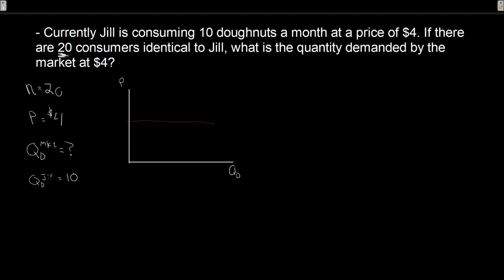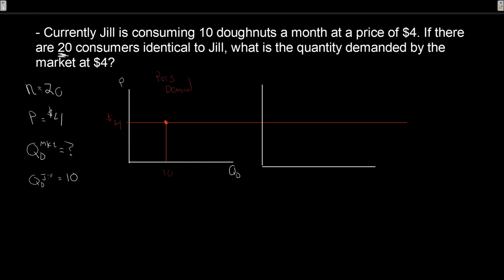What we do know is that at a price of $4, Jill is consuming 10 donuts. Although we don't know the full curve, we know this single point on her demand curve: at $4, she buys 10. What we are trying to find is the market demand. For the market, we'll have price of donuts and quantity demanded. We need to figure out what is this market quantity demanded — there probably is some demand curve going down, but we just know that one point.